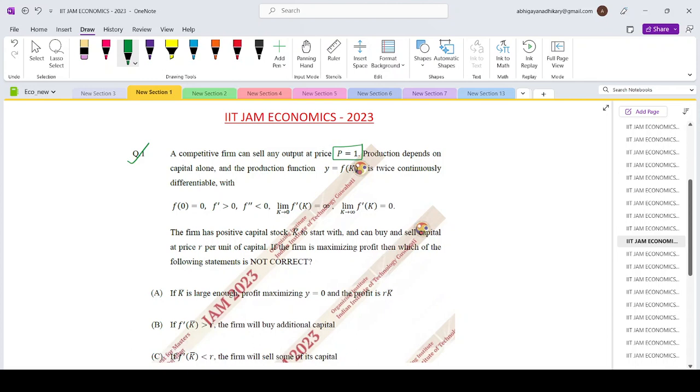K tends to 0, F prime K equals infinity, and K tends to infinity, F prime K equals 0. All this basically tells you that we are having a concave production function with capital K on the horizontal axis and Y on the vertical axis. So the production function that we are talking about is the concave production function.